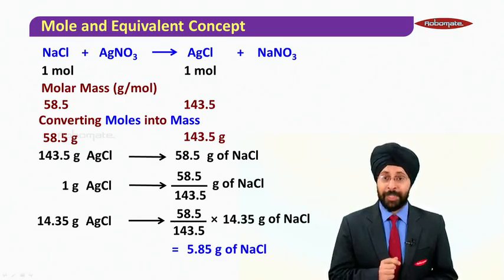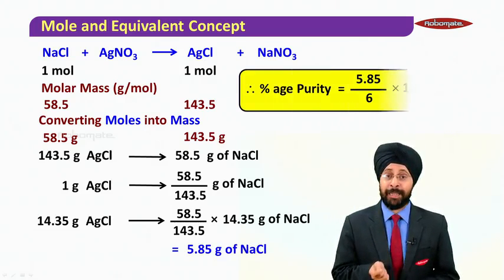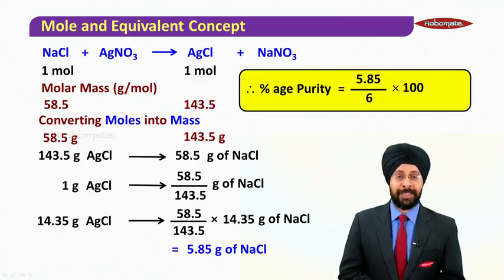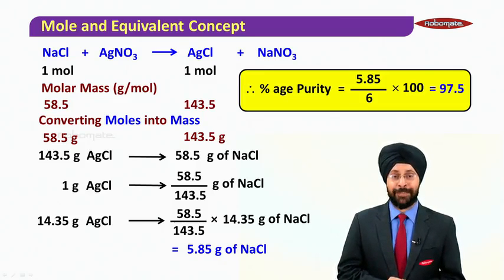This was the actual amount. Theoretically, how much was given? 6 grams. So percentage purity is simply 5.85 divided by 6 times 100, that is equal to 97.5%.